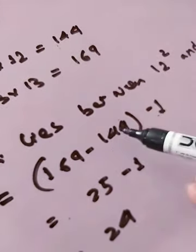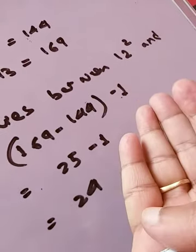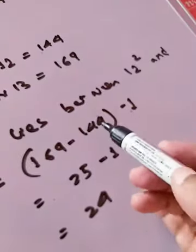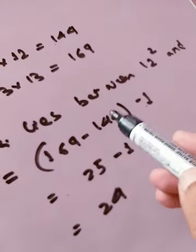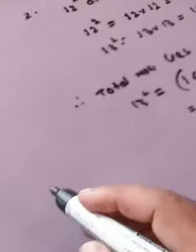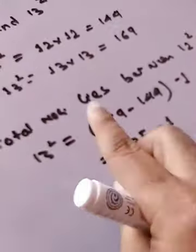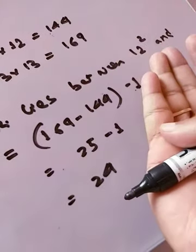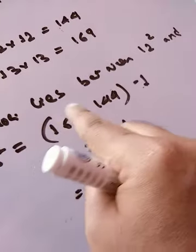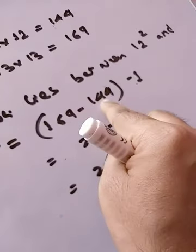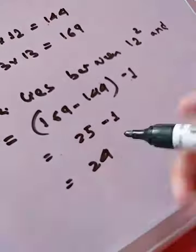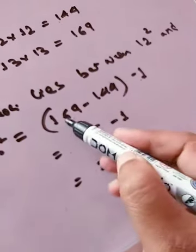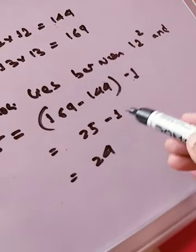The reason is that when you start counting, you don't count 144 itself — you start counting from 145. So counting from 145 up to 169 gives you 25 numbers. But the question asks for numbers lying between 169 and 144, meaning neither 144 nor 169 is included. Since we counted 169 in those 25 numbers, we subtract 1. So altogether, 24 numbers lie strictly between 144 and 169.